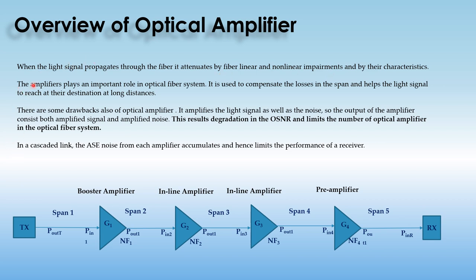The amplifier plays a very important role in the optical fiber system because it is used to compensate the losses in the spans and help the light signal to reach its destination over very long distances.